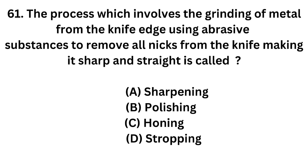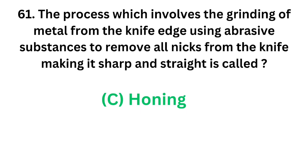Question number 61. The process which involves the grinding of metal from the knife edge using abrasive substances to remove all nicks from the knife, making it sharp and straight, is called: Option A: Sharpening. Option B: Polishing. Option C: Horning. Option D: Stropping. The correct answer is Option C, Horning. Grinding of metal from the knife edge using abrasive substances and removing all nicks, making it sharp and straight, is called horning.